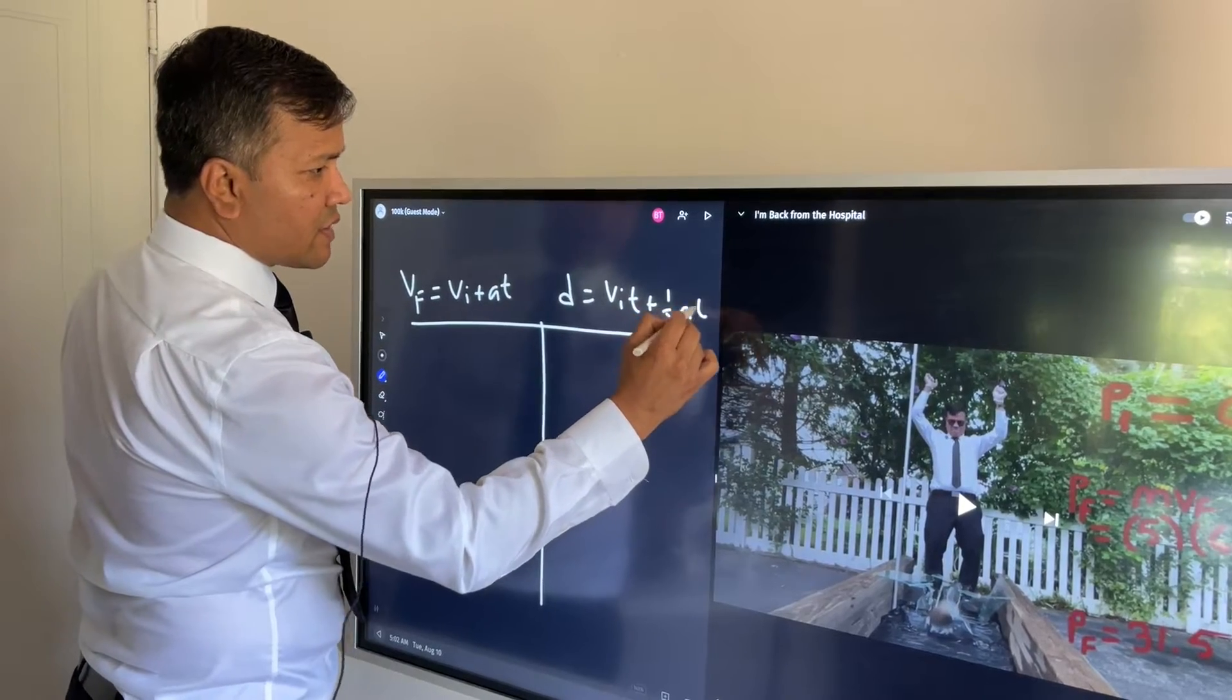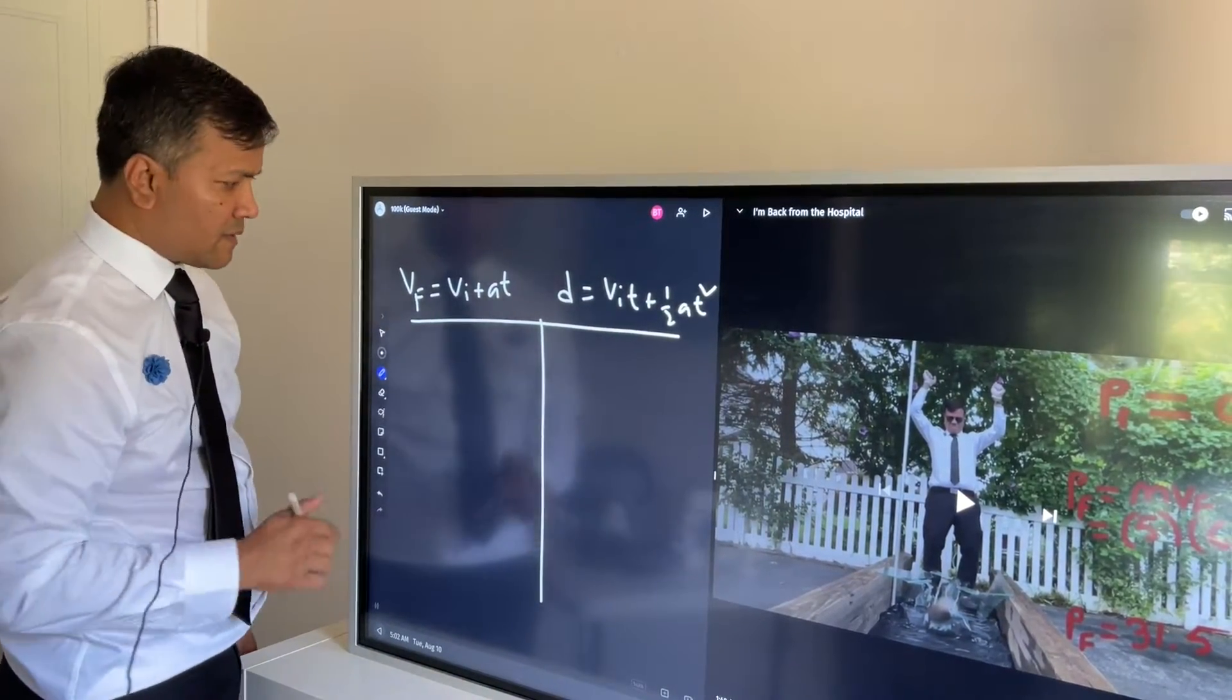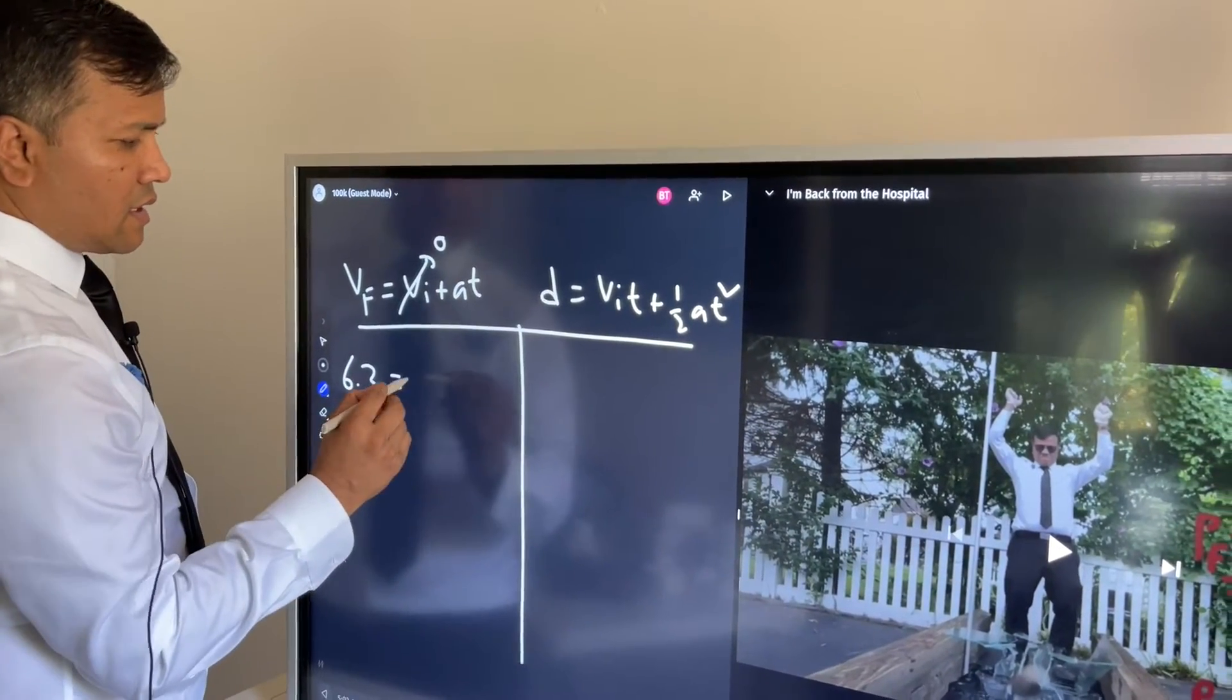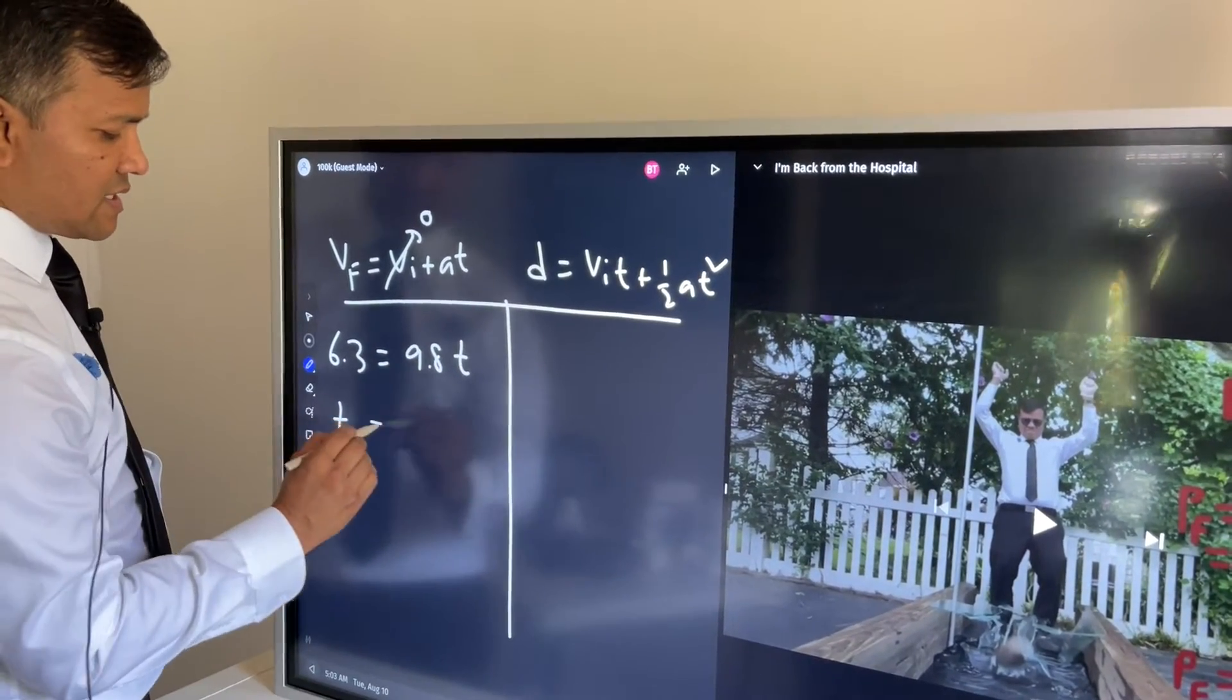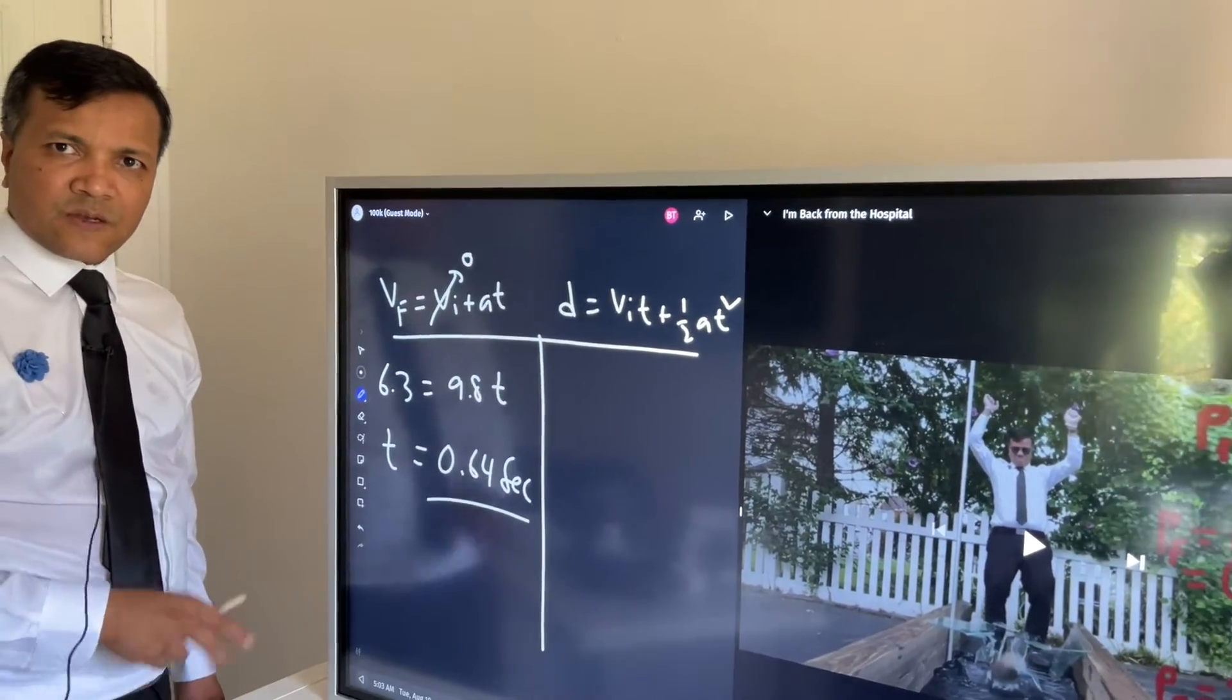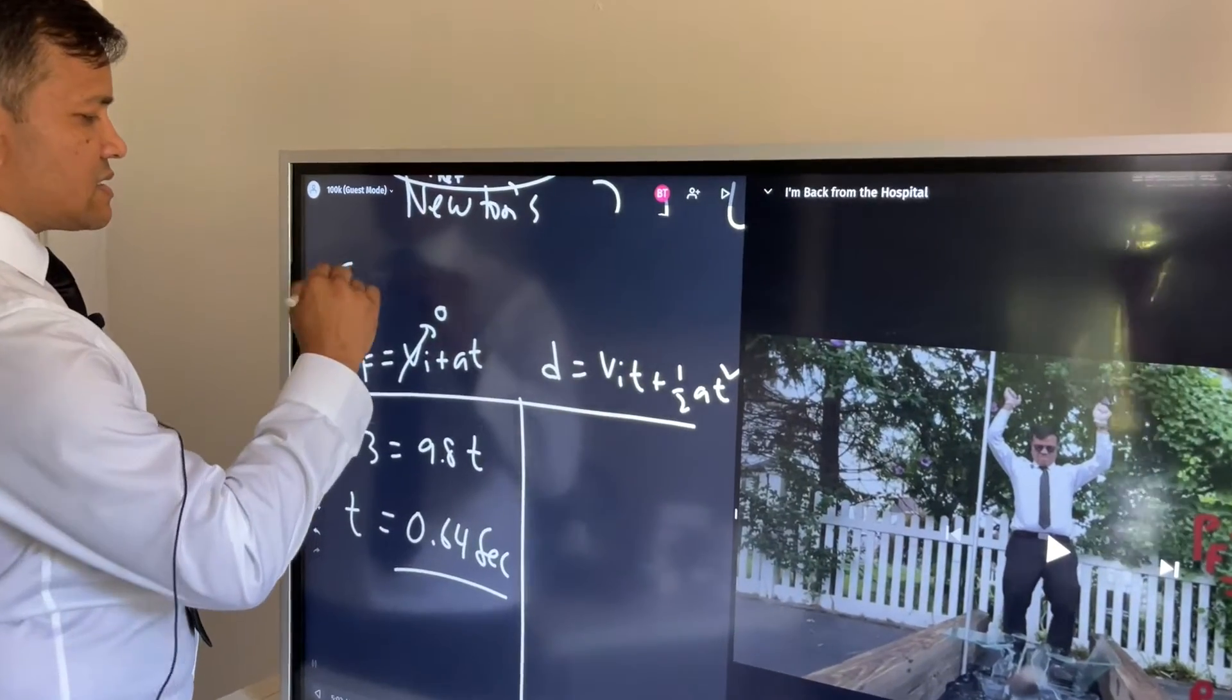plus (1/2)at^2. As you remember, we proved these two formulas in the flip classroom video. v = vi + at: vi is zero because you drop it, so a = 9.8 times t, giving t = 0.64 seconds. So it took about 0.64 seconds for the tennis ball to hit the ground.